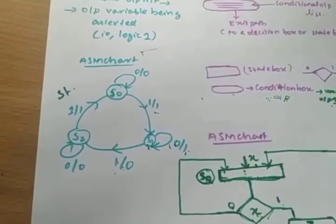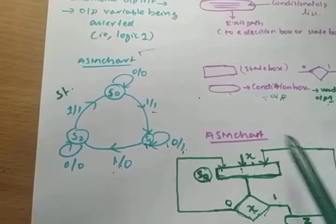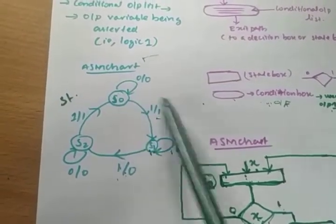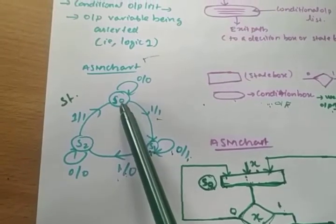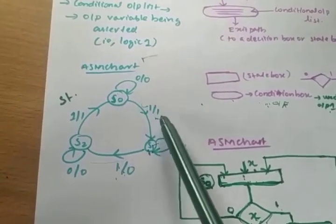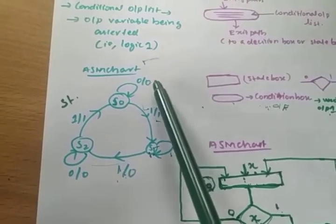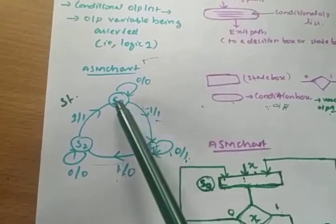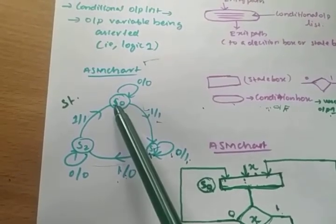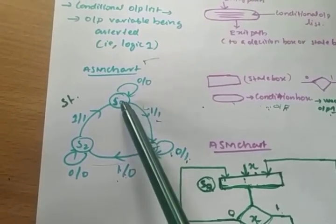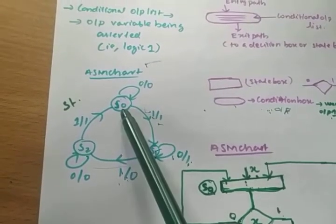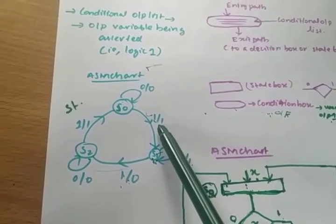First I am giving an example, then I am drawing the ASM chart. This is the state diagram. We have three states: S0, S1, and S2. This is a Mealy machine — output depends on present state and input. In state S0, if input 0 is given, output is 0 and next state is S0. In S0, if input 1 is given, it goes to state S2 with output 1.